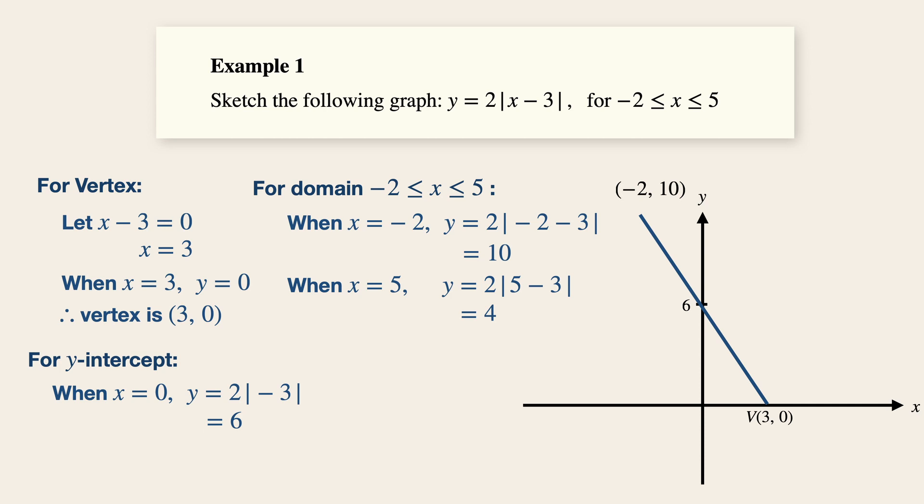Similarly, the graph stops at x equals to five and y equals to four on the right. So we can extend it to the right as such and always label your points. Now put a circle dot to indicate that the graph includes the values of x equals to minus two and five respectively. If this is a less than sign, you can put a circle to indicate that it is not inclusive. So there you have it. Let's label the graph to answer to the question.